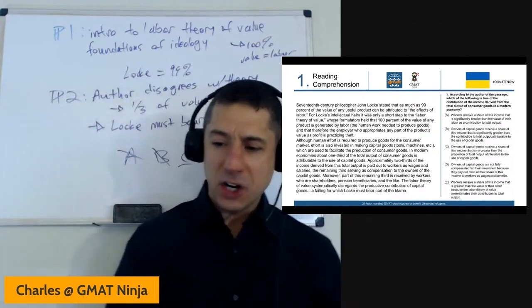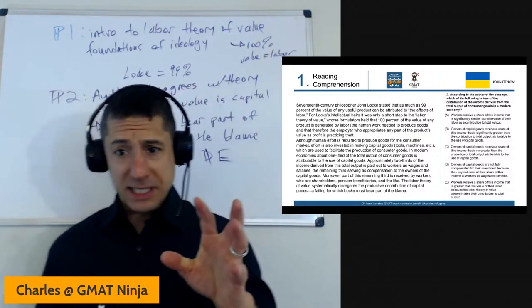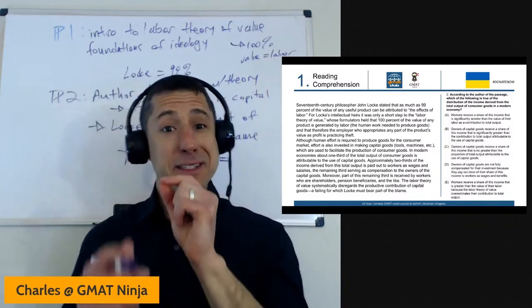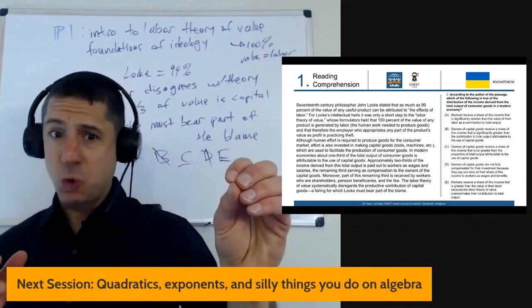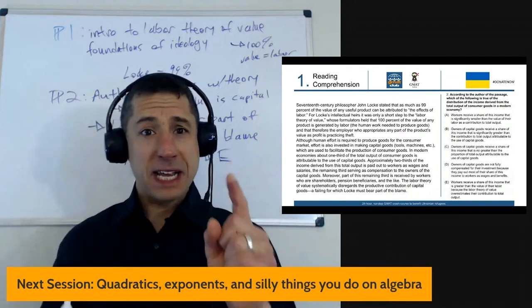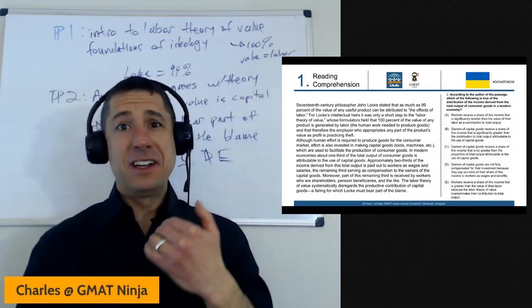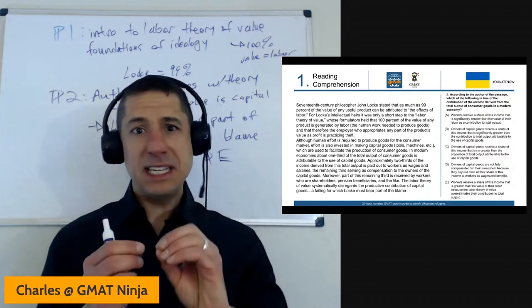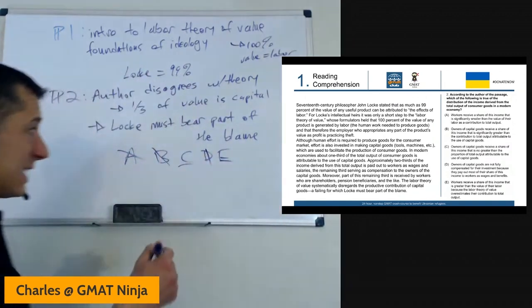D, owners of capital goods are not fully compensated for their investment because they pay out most of the share of this income to workers as wages and benefits. Nothing about that. The author's certainly not making the case that the owners of the capital goods somehow are entitled to or have produced 100% of the value and end up giving two-thirds of it away. And E, workers receive a share of this income that is greater than the value of their labor. I'm going to stop there for a second. I saw a decent number of people picking E. That first piece, not bad, right? Workers receive a share of this income that is greater than the value of their labor. Because the author's kind of arguing that, yeah, two-thirds in a modern economy comes from labor. Workers receive that. They also receive a little bit more in the form of pensions and shareholders. So we're good so far, but you got to keep reading. Because the labor theory of value overestimates their contribution to total output, that is not why they receive too much. It has nothing to do with it at all. So for that reason, E is out.